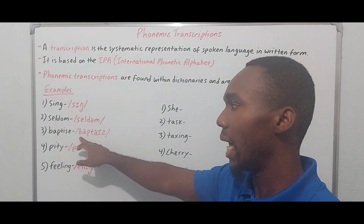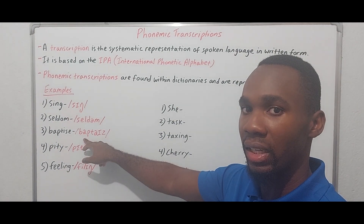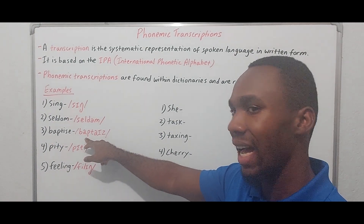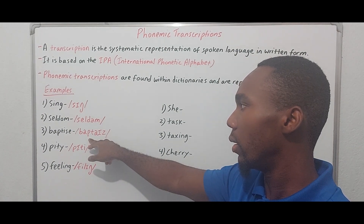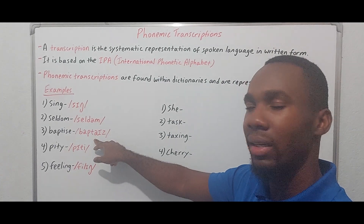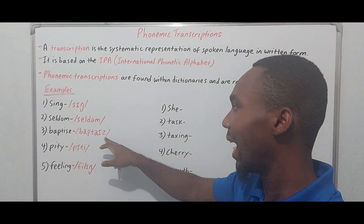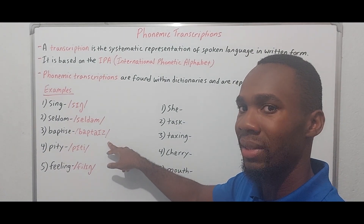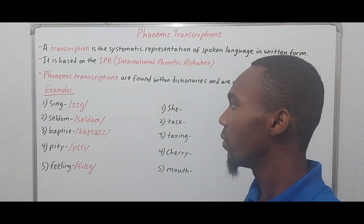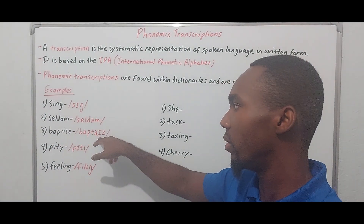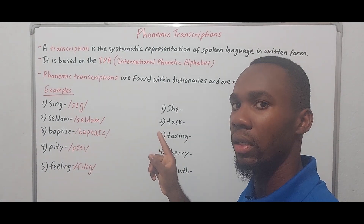Third example: 'baptize.' We have B, then the vowel A as found in words like 'bat' and 'trap,' then P — a bilabial plosive — then T, then the diphthong 'aie' — a combination of two vowel sounds — and finally Z. So: baptize, with that diphthong represented by its combined symbol.